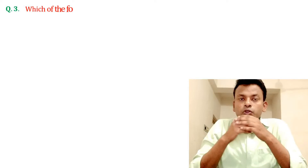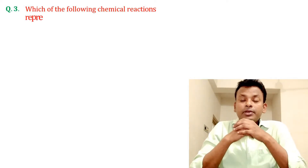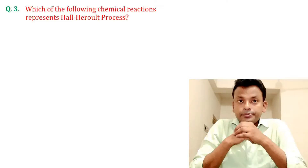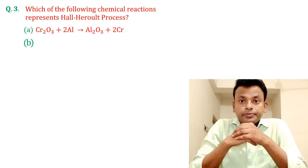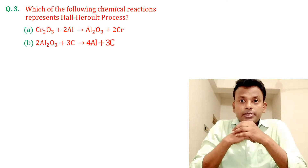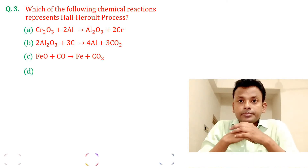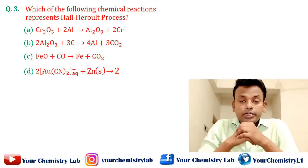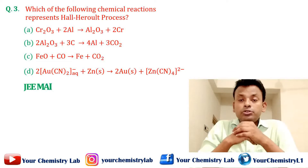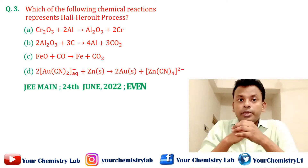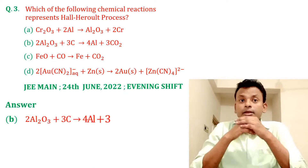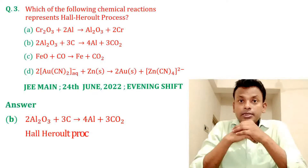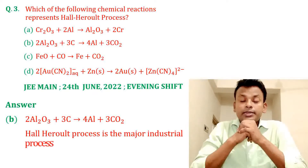Question number three: Which of the following chemical reactions represents the whole hydrometallurgy process? Option A, option B, option C, and option D. This question was set in JMN 24th June 2022 evening shift. Answer: Option B is the correct reaction. The hydrometallurgy process is the major industrial process for extraction of aluminium.